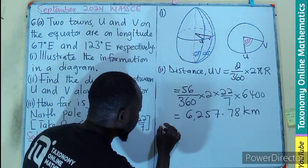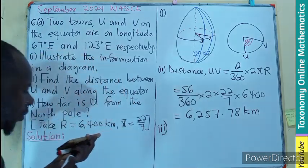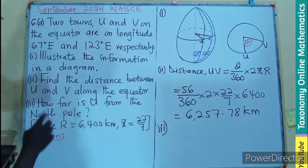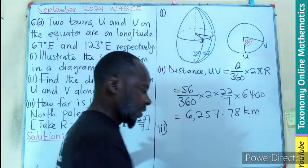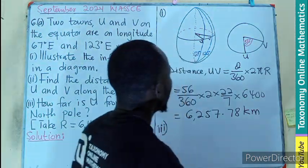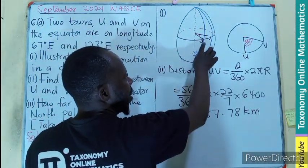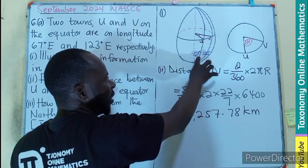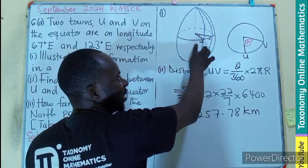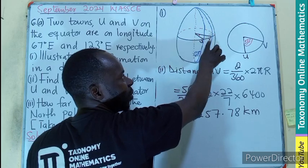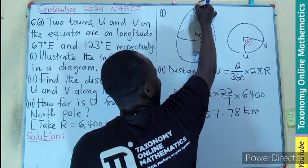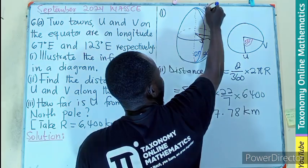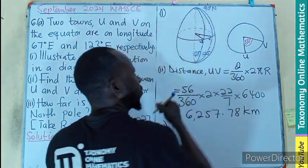Let's take part three. We are looking for how far is U from the North Pole? Where is the U? The U is here. Now the U is on the longitude 67 and latitude 0. So the North Pole here, there will be a latitude, it will be 90 degrees what? North. That's the North Pole.